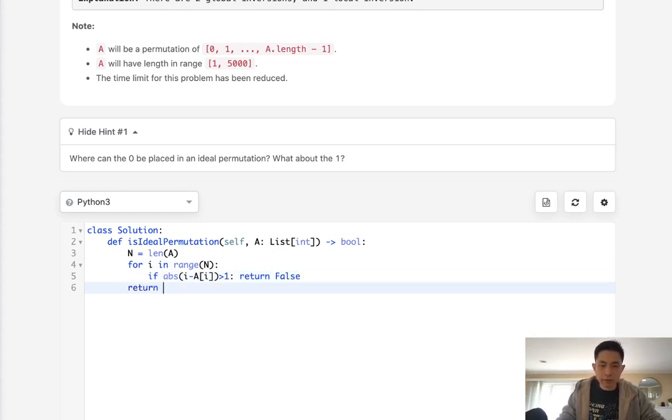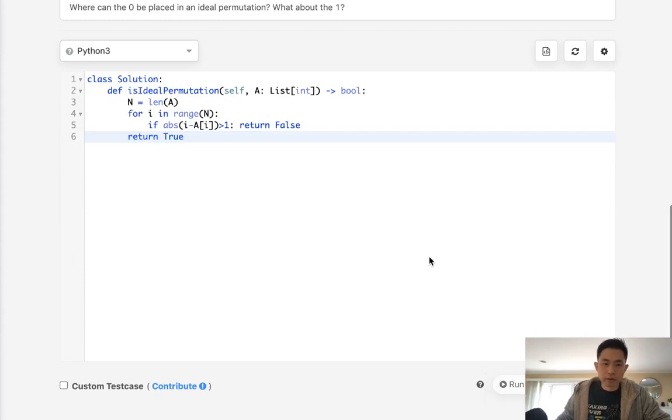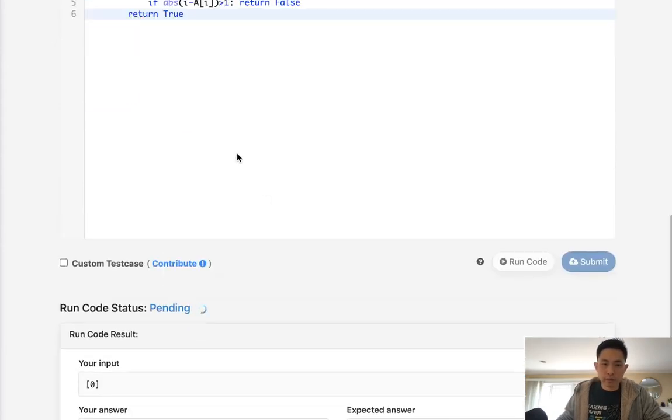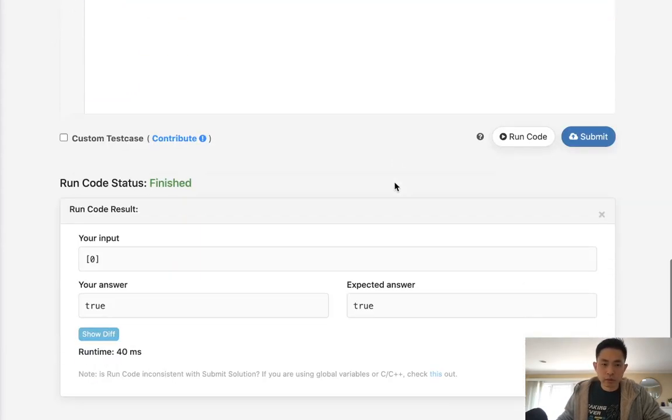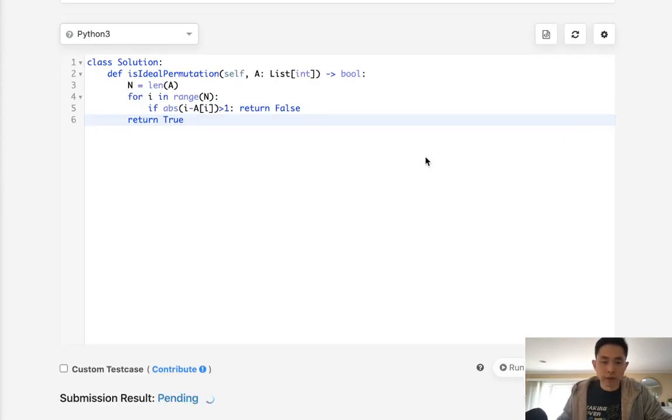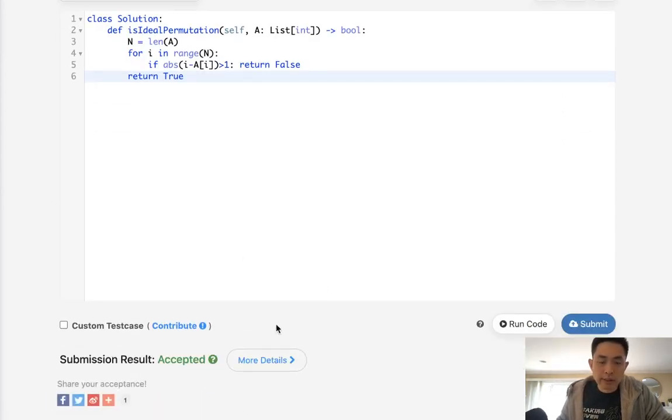Otherwise if we can get through this whole thing that means the number of global inversions and local inversions are the same. So this would really be it, this would be O(n) time and actually use O(1) or constant space and there we go accepted.